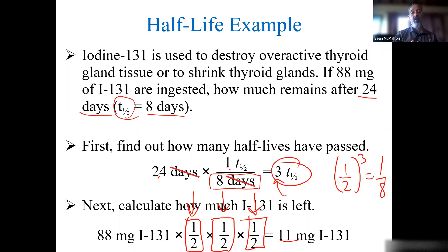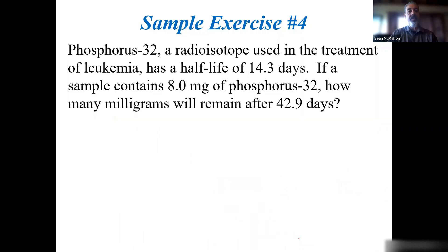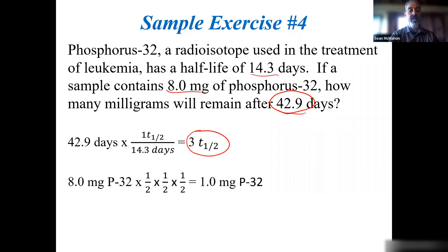This is an example of how we can calculate the amount remaining after a certain period of time. We can also do the reverse, where we can determine a half-life based on the amount remaining. Phosphorus-32 is a radioisotope used in the treatment of leukemia and has a half-life of 14.3 days. If I have a sample of eight milligrams, how many milligrams will remain after 42.9 days? First, we have to figure out how many half-lives there are. 42.9 days divided by 14.3 gives me three half-lives. I start with eight milligrams, times one-half, one-half, one-half, and I get one milligram.